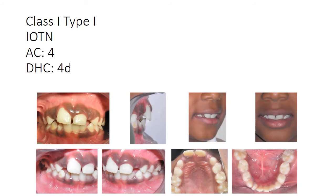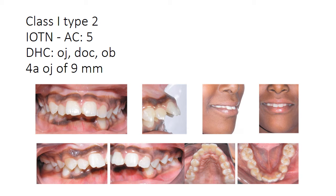The next case is a Class 1, Type 1 case with a proclined upper incisor, so it's Type 1 and the molar relationship is Class 1. The IOTN aesthetic component is 4. The dental health component is 4D because of displacement of contact greater than 4 millimeters. There is also a significant amount of overjet.